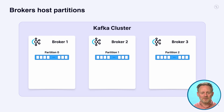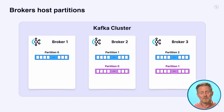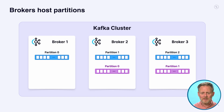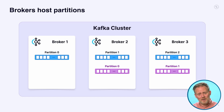This is how Kafka scales. You're probably not going to have a cluster with just one topic, so here's another one in a different color — it only has two partitions. In this case, the partitions are only hosted on two brokers. Topics can have different numbers of partitions depending on what you think their scale needs are going to be.